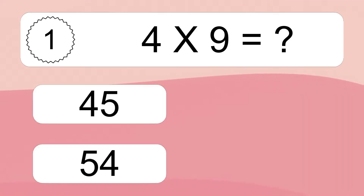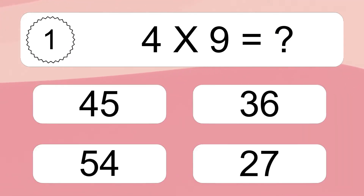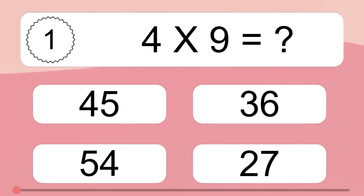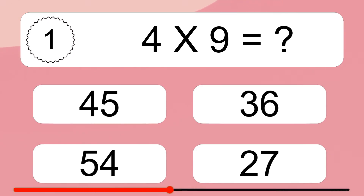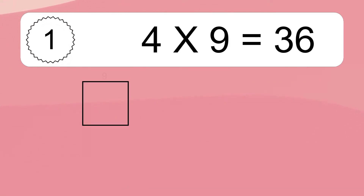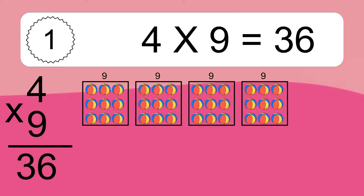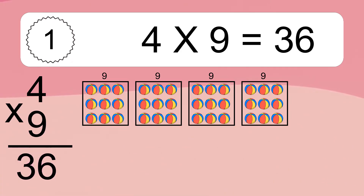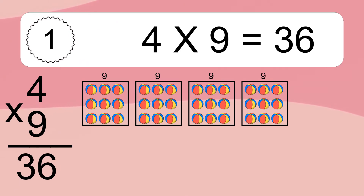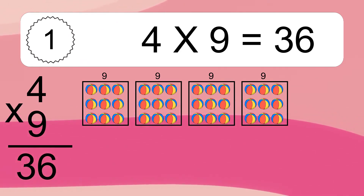4 times 9 equals what? 4 times 9 equals 36. We have 4 boxes, and each box has 9 colorful balls inside. If you count all the balls in all the boxes together, you will have 4 times 9 balls. This equals 36 balls.